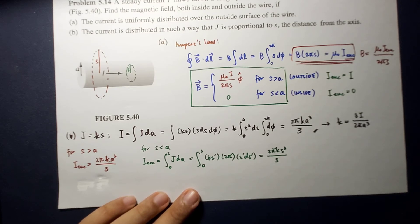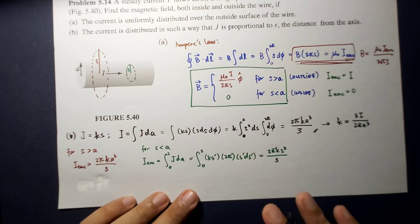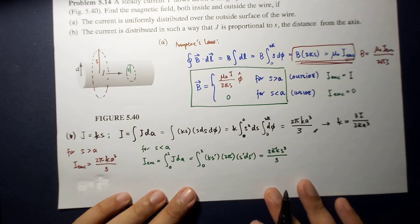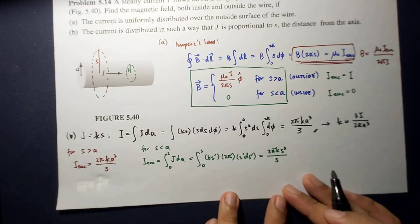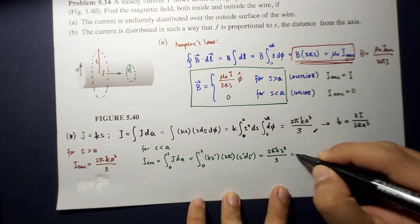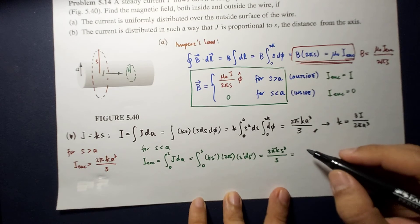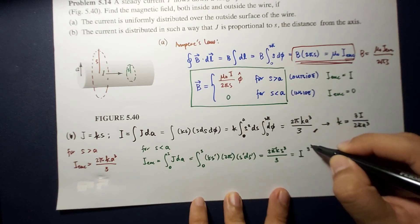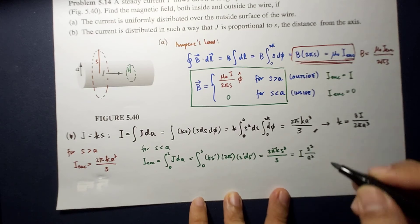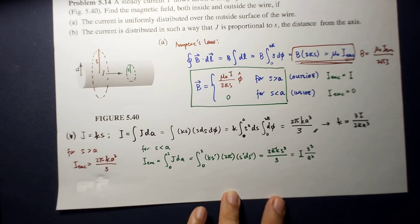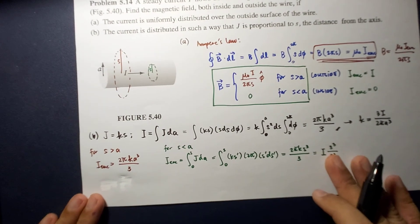So, this is 2 pi K S cube over 3. Okay? You see? So from here, we can now see that, what? So I enclose for S less than A would be equal to I S cubed over A cubed.